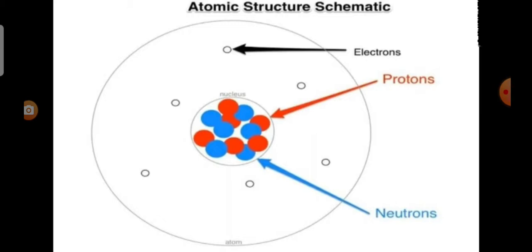By nature, electrons have negative charge and protons have positive charge. Respectively, neutrons do not have charge.